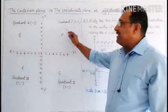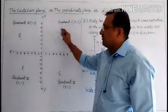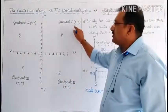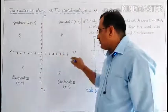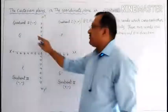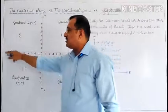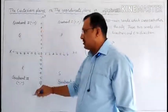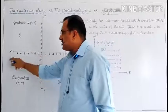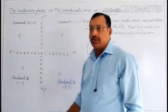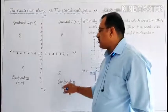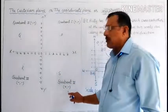Anticlockwise from the first quadrant: Quadrant 1 contains all points where both X and Y coordinates are positive — that is east and north directions, both positive. Quadrant 2 has X coordinate negative (west direction) and Y coordinate positive (north). Quadrant 3 has both X and Y coordinates negative — west and south. Quadrant 4 has X coordinate positive (east) and Y coordinate negative (south).